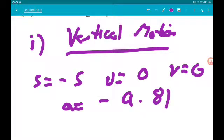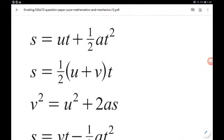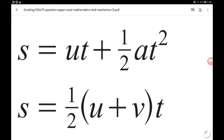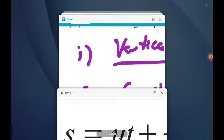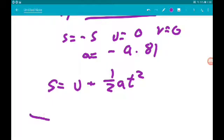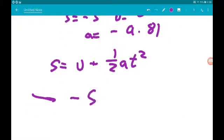Okay, to SUVAT to find a suitable equation. So this one here will do: S is ut plus half a t squared. So using that, we get minus 5 is equal to 0 plus a half times minus 9.81 t squared. So we get minus 5 is minus 9.81 over 2 t squared.